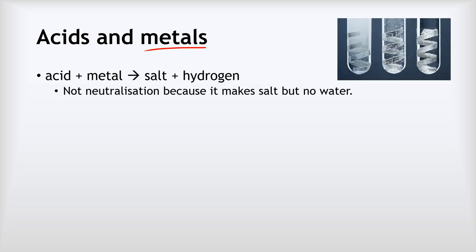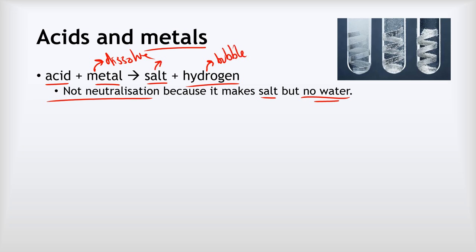Our final reaction of acids is the reaction with pure metals — not a metal carbonate, hydroxide, or oxide, just the pure metal on its own. This reaction is very different: an acid and a metal react to make a salt, but this time there's no water — we make hydrogen gas instead. This is not a neutralization reaction because although it makes a salt, it doesn't make water. You will observe the metal dissolve over time, bubbles of hydrogen gas being produced, and a temperature increase.